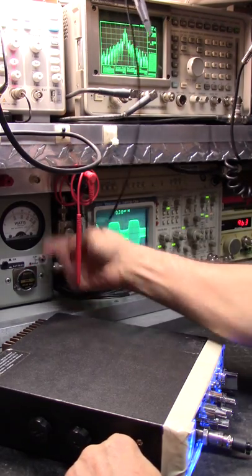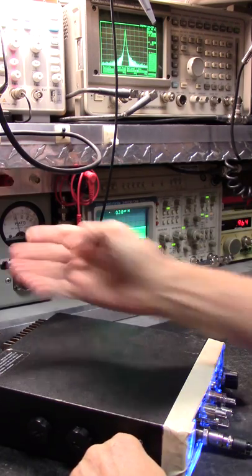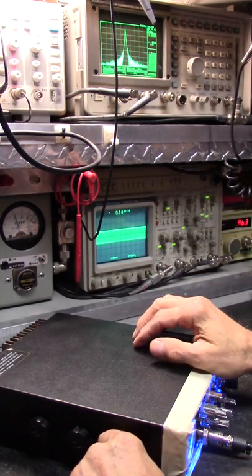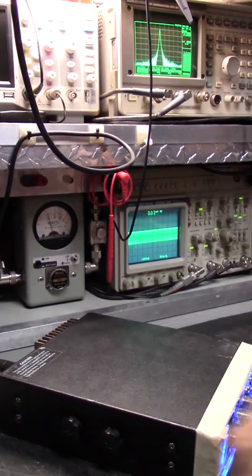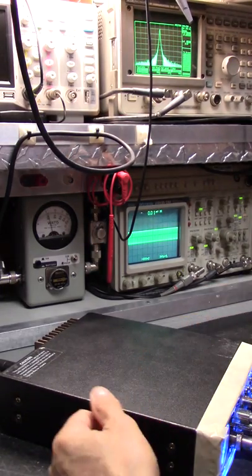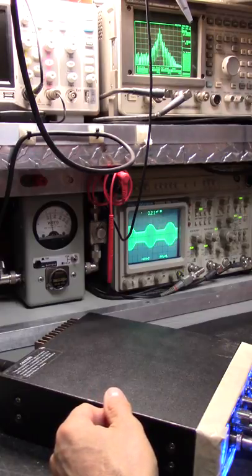And again. Okay, we know what kind of meter this is. The Bird 4314 that's showing the continuous. I mean, that's ridiculous. Watch the meter, look at the scope, look at the spectrum analyzer.